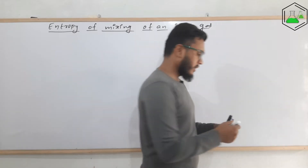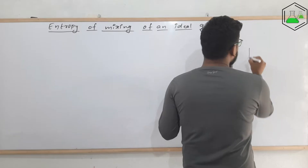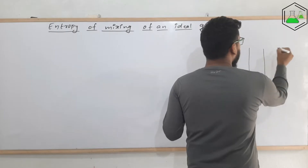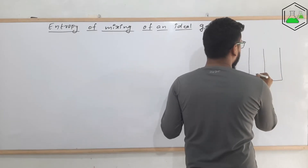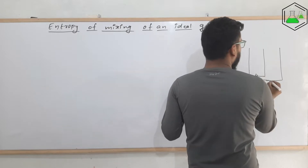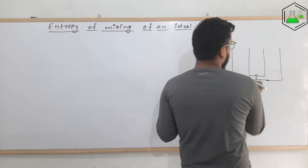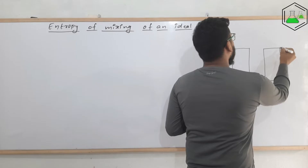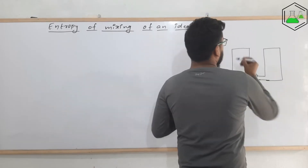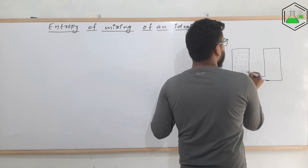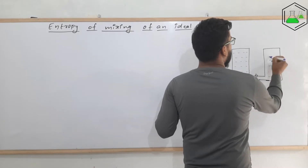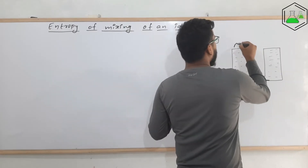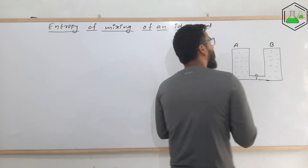To find out the conclusion, let us consider there are two containers connected to each other by a thin tube that has a stopper. We can control the flow of gases with that stopper — we can let them mix or separate them. Both containers contain ideal gases: in the first container, ideal gas A is kept, and in the second container, ideal gas B is kept.